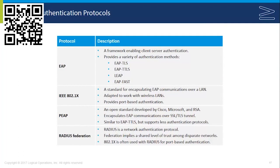What we often see in wireless networks is the use of 802.1X, a standard for encapsulating EAP communications over a LAN that has been adapted for wireless LANs, providing port-based authentication. It allows the wireless access point to forward authentication requests to a central system using the RADIUS protocol. The access points forward traffic to a central RADIUS server, which uses directory databases of user accounts and/or certificates to authenticate and then authorize users to connect.